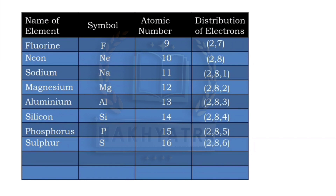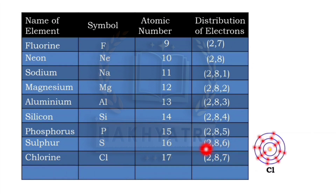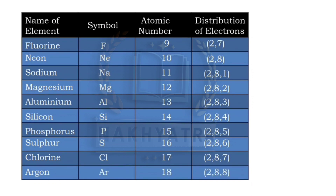Sulfur has atomic number 16 with distribution 2,8,6. Chlorine has atomic number 17 with distribution 2,8,7 — two in the first cell, eight in the second, and seven in the third. Finally, argon has atomic number 18 with distribution 2,8,8 — two in the first cell and eight electrons in each of the second and third cells.